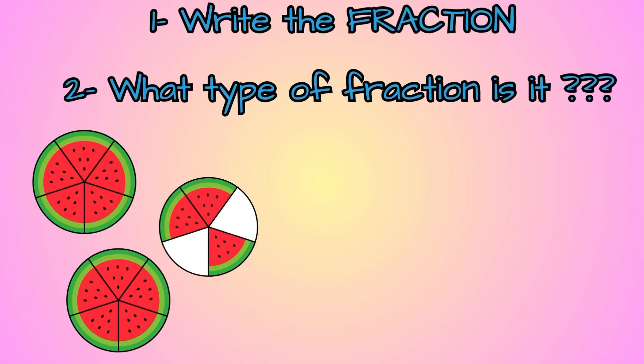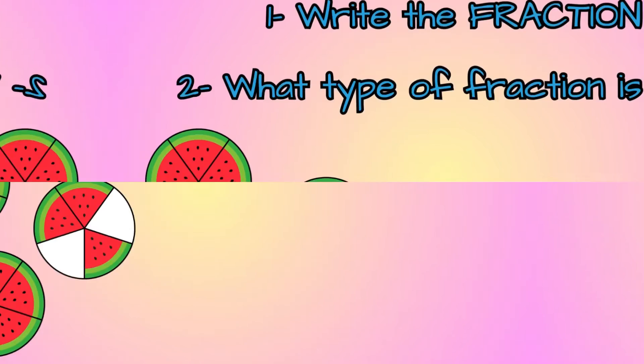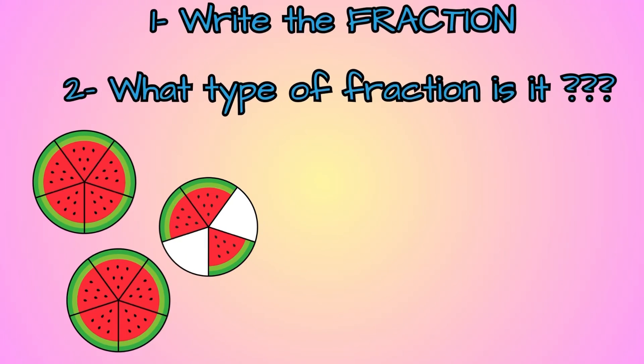Write the fraction. What type of fraction is it? Using these wholes, you can write two types of fractions. Yes, we can write 2 and 3 fifths because we have two whole watermelons and we have 3 fifths of the other one. And, of course, this is a mixed fraction. We can also write an improper fraction.